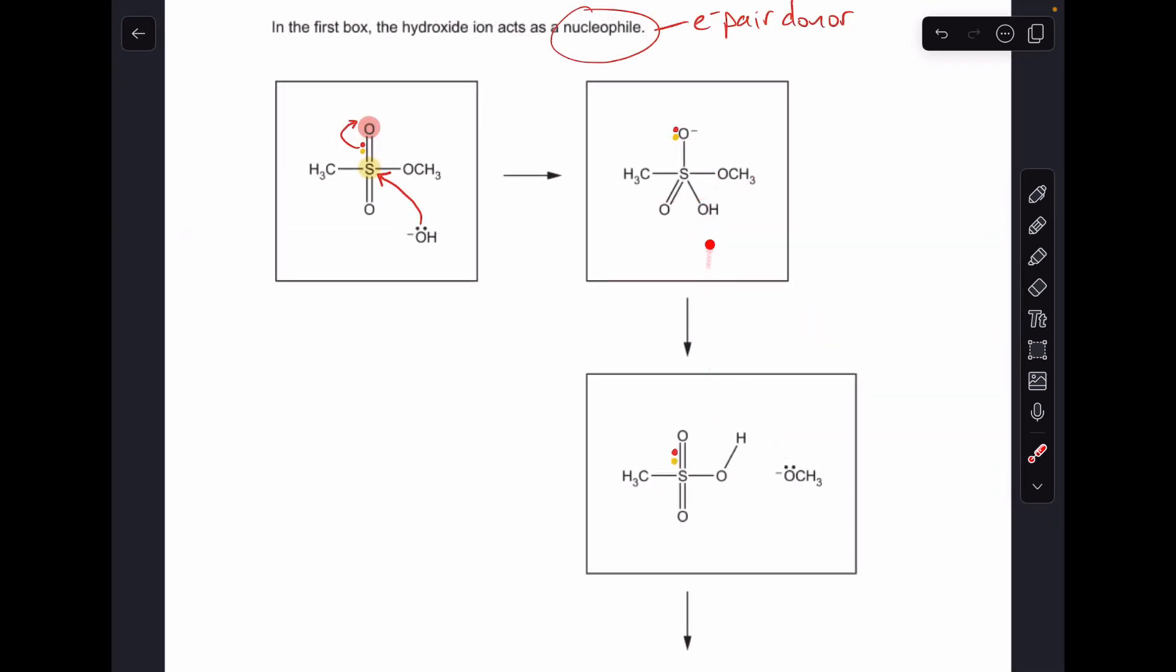So if we move on to the changes that have happened between these two boxes here, you can see I've drawn the red and yellow dot on the new SO double bond. Basically what's happened is this pair of electrons on that O minus have gone back to reform that SO double bond.